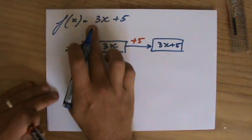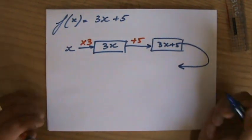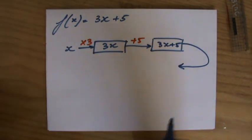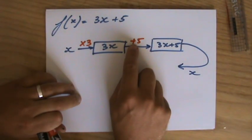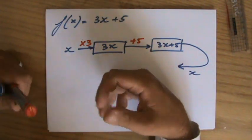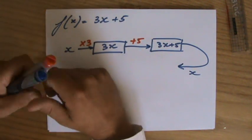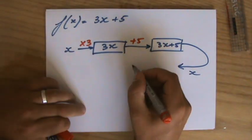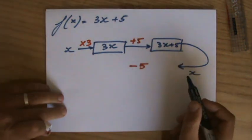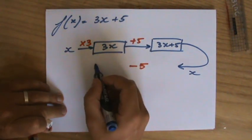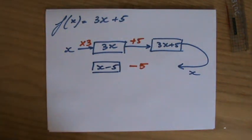So first it times by 3 and then add it by 5. Now to find the inverse I'm doing it exactly in opposite direction, so I'm going to put in x. And rather than plus 5, what is the inverse operation? What is the opposite thing of plusing it by 5? Plusing it by 5, the opposite is minusing it by 5. Now what do I have then if I put in x and I minus it by 5? I have x minus 5.